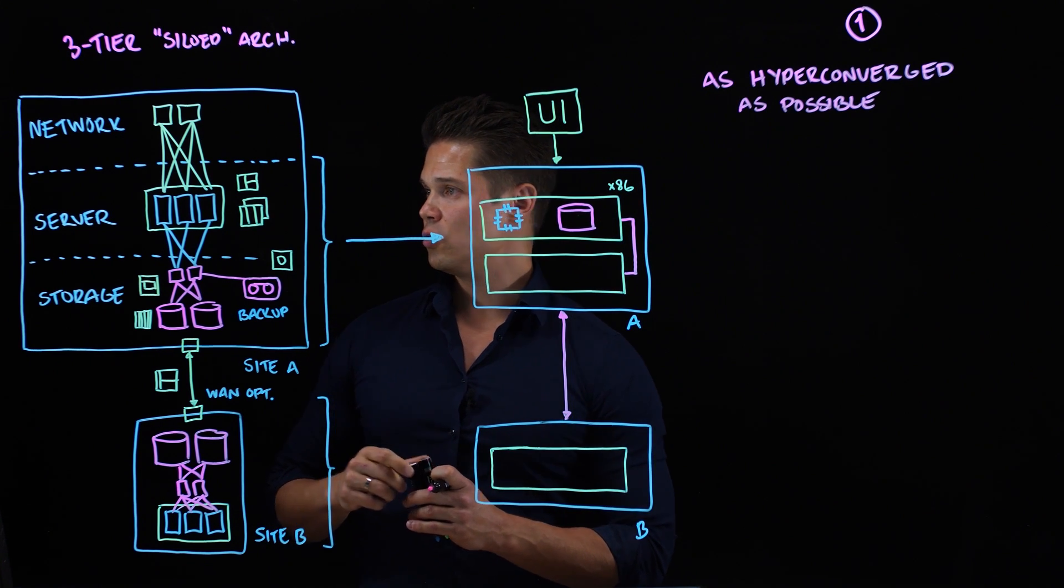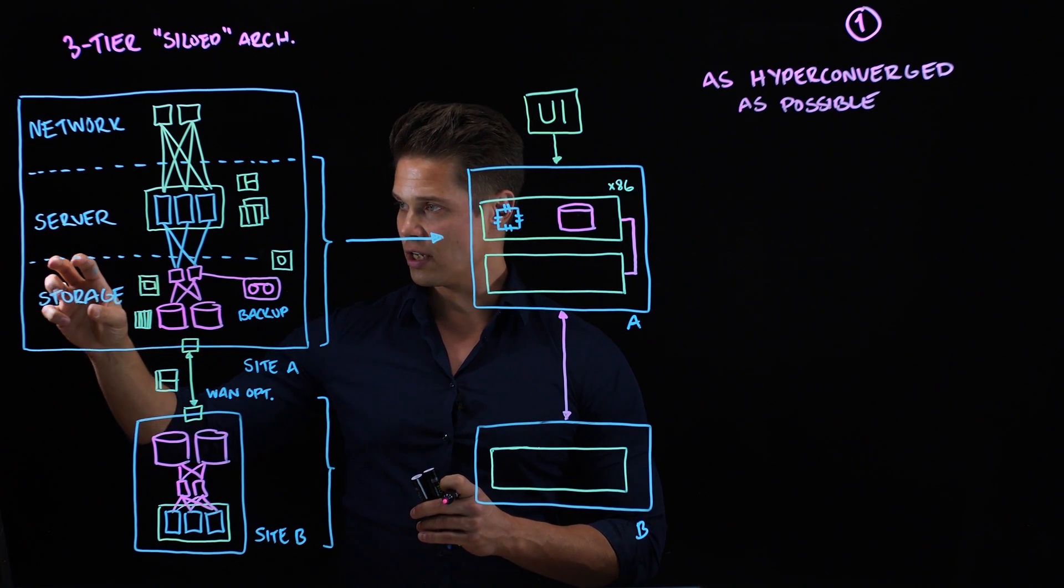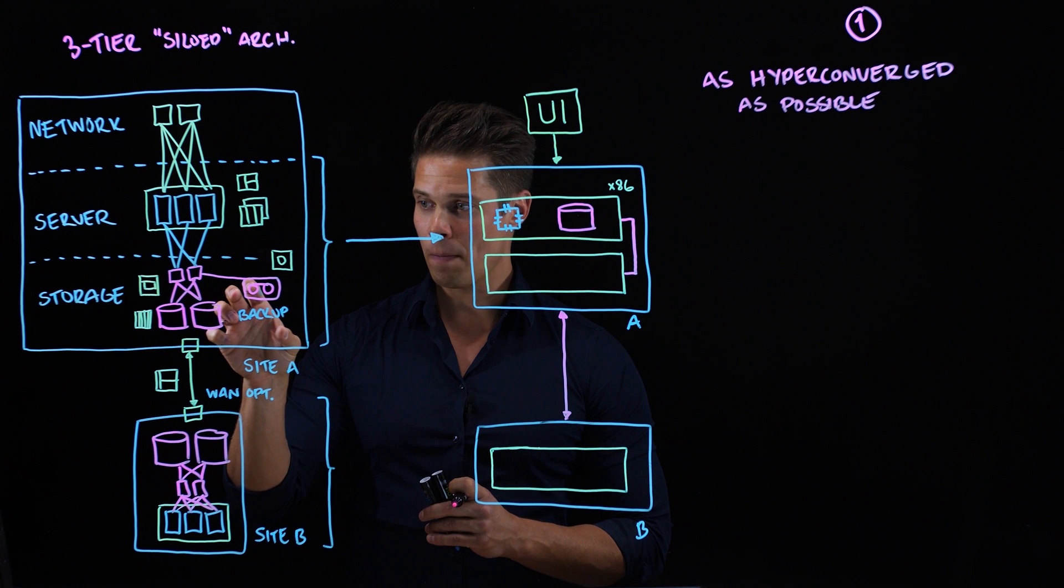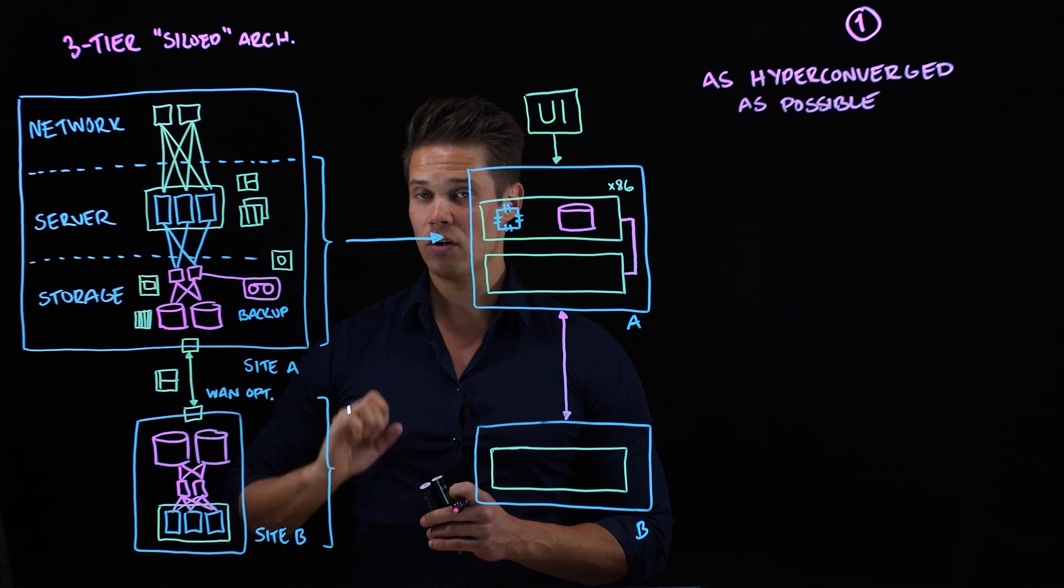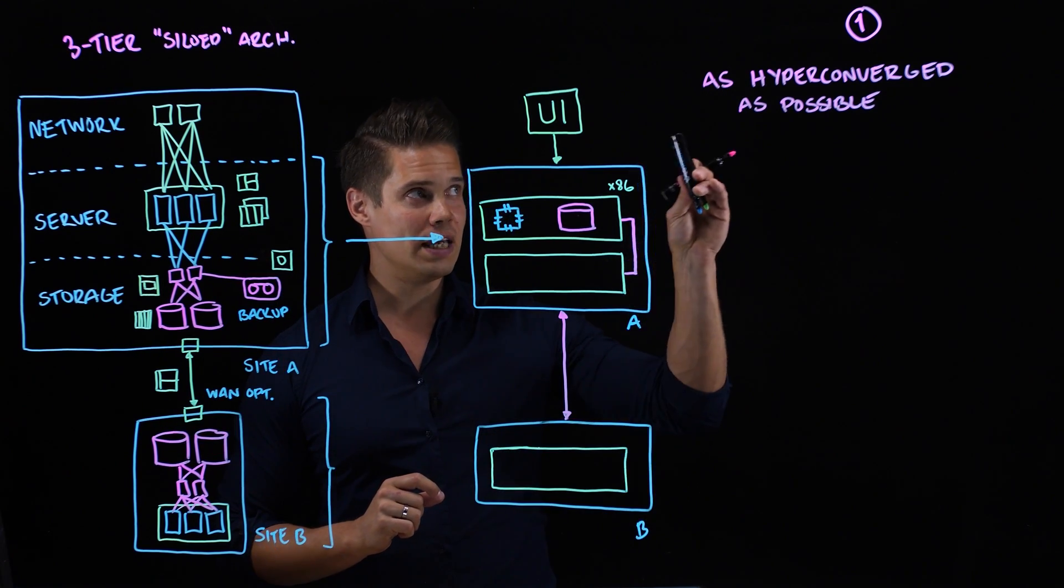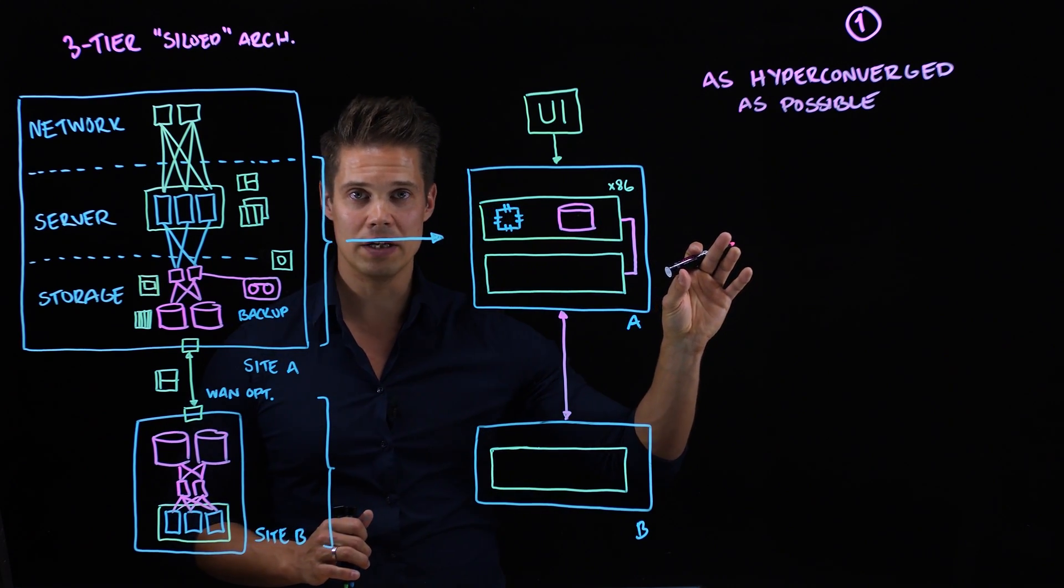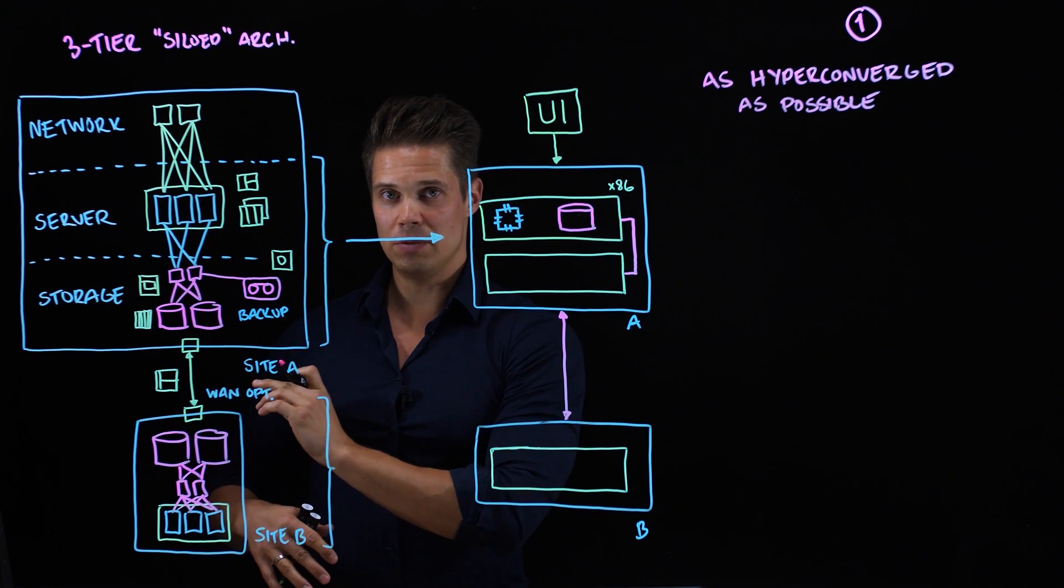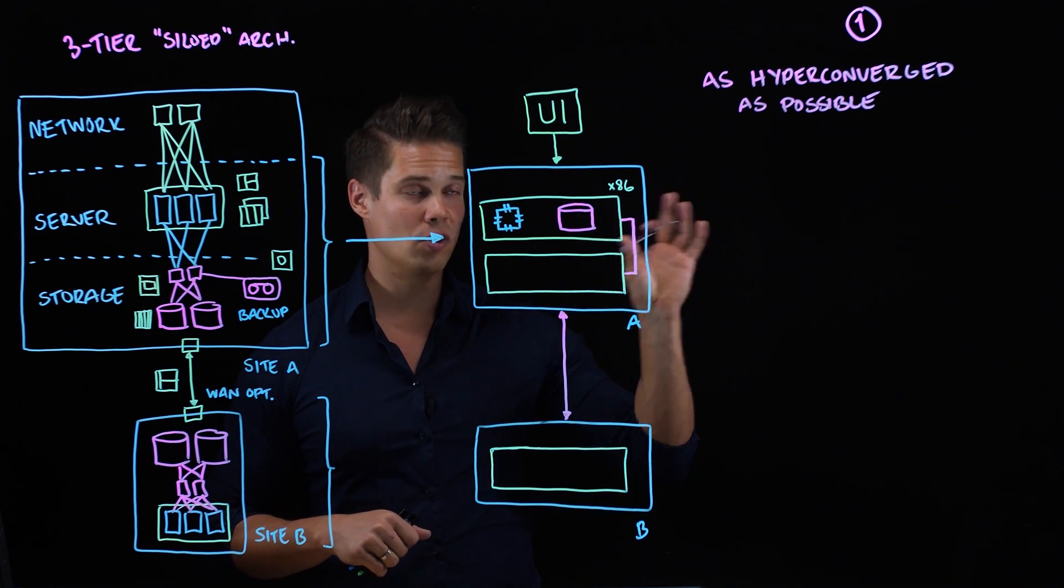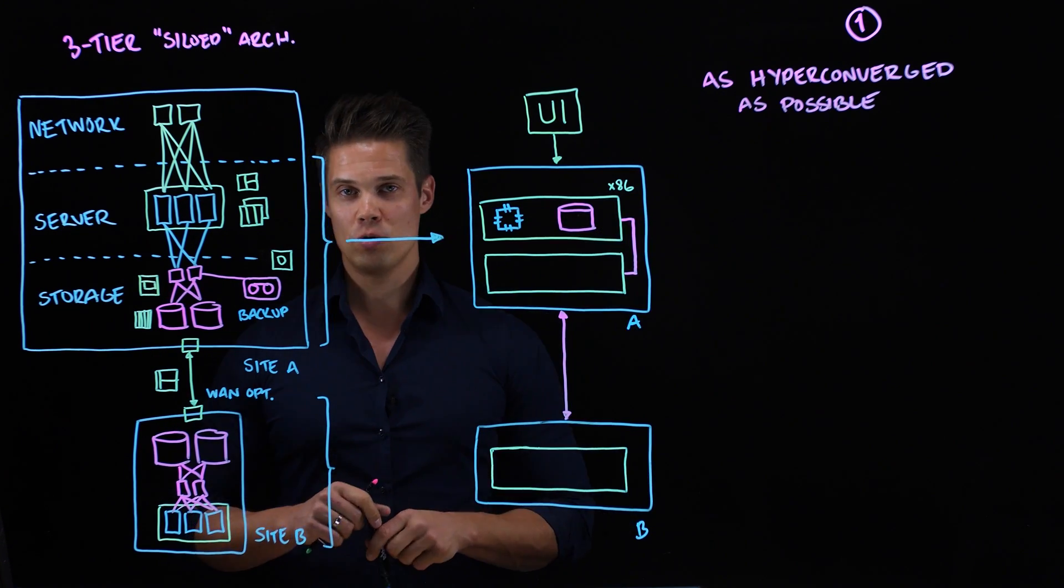So, what we can do is to converge, obviously, server and storage, but also, for example, backup and WAN optimization. So, keeping in mind that there are different kinds of hyperconverged solutions out there. Some do the bare minimum. Some of them go the extra mile and some of them go two extra miles.